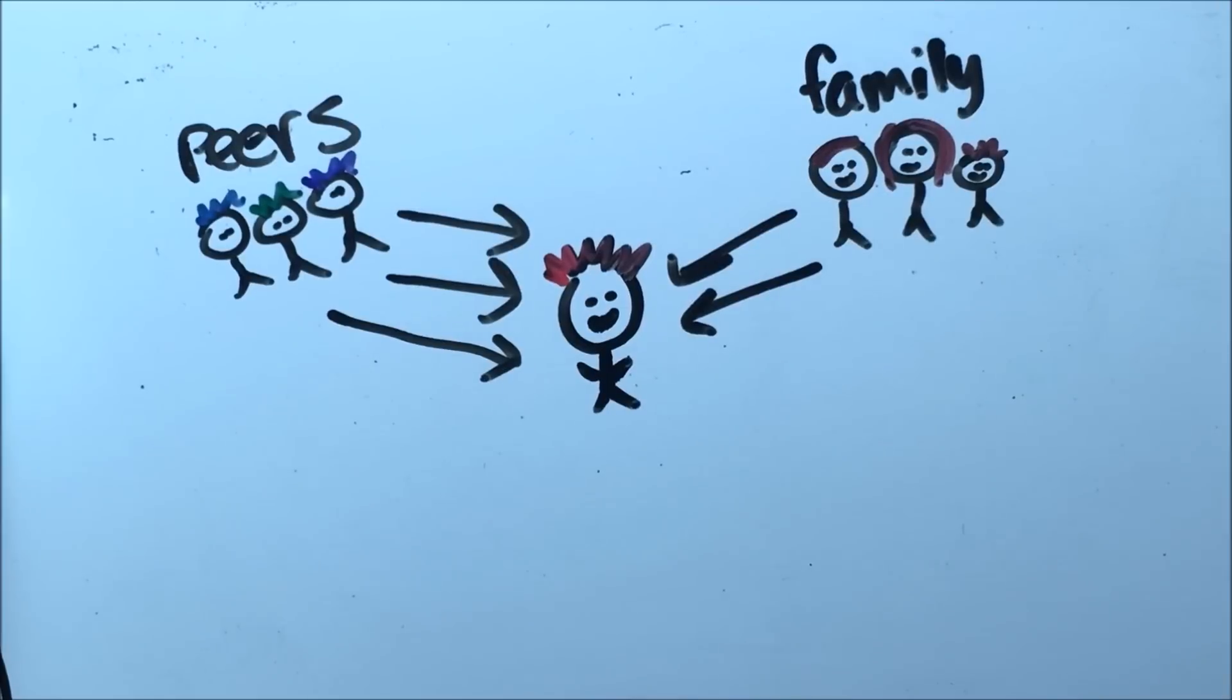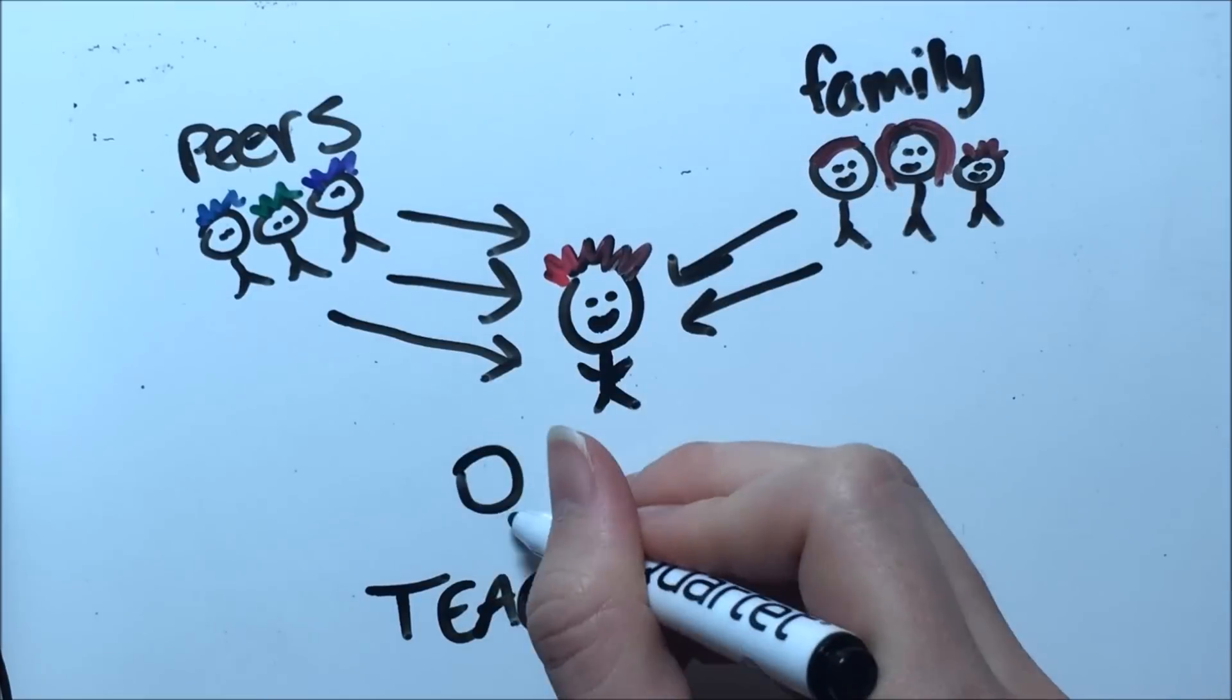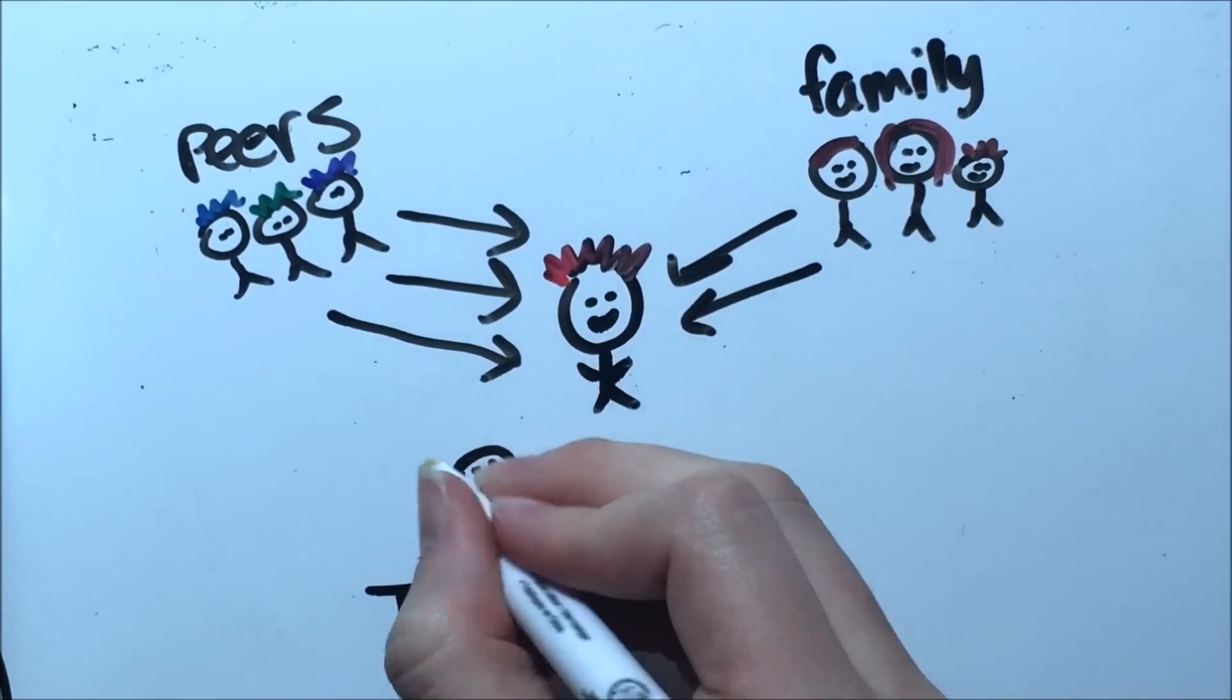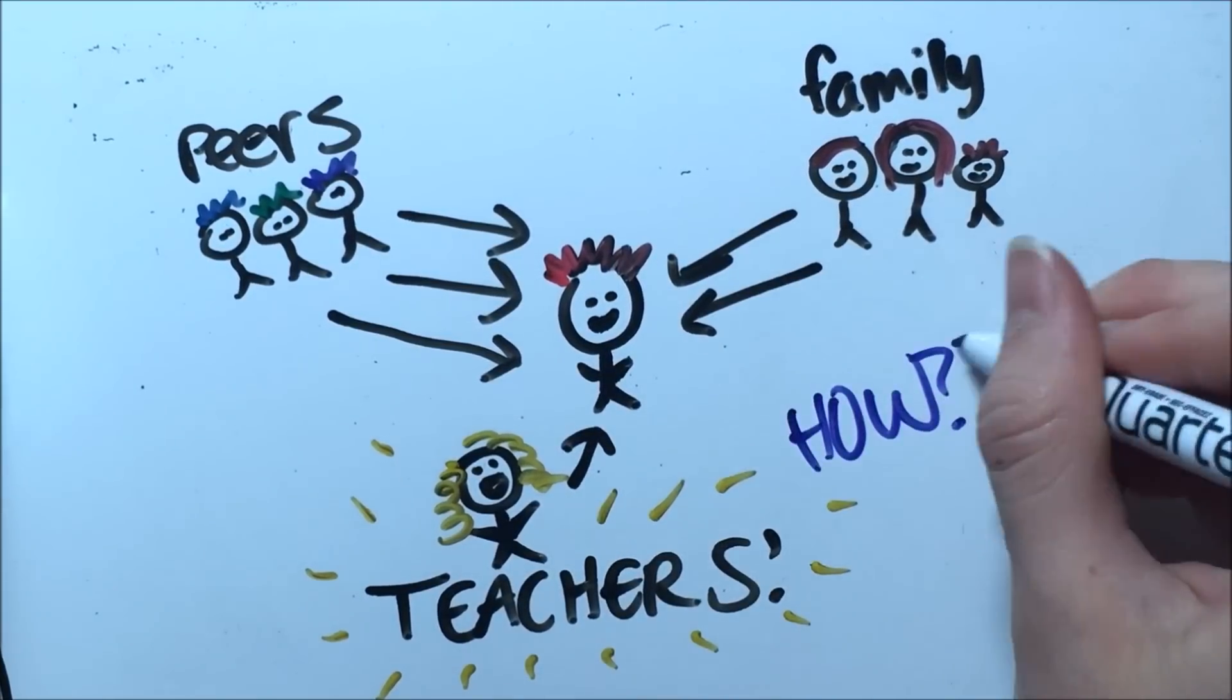Second, Bob is influenced by his family in both positive and negative ways depending on their circumstances. But obviously, we can't change a kid's family circumstances on our own, so that isn't an option for us to help either.